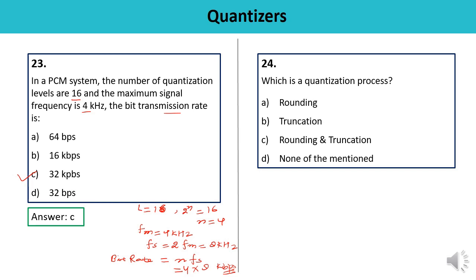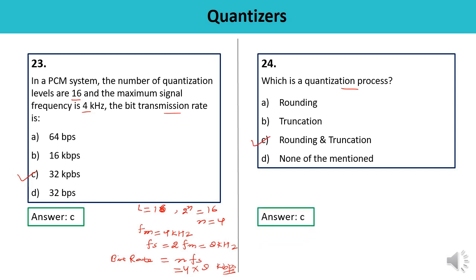Question 24: Which is the quantization process — rounding, truncation, both rounding and truncation, or none? Rounding and truncation are both part of the quantization process. The answer is C.